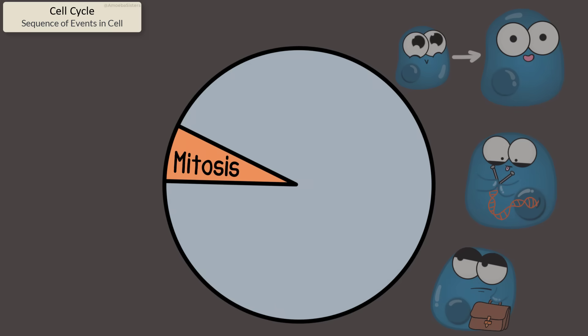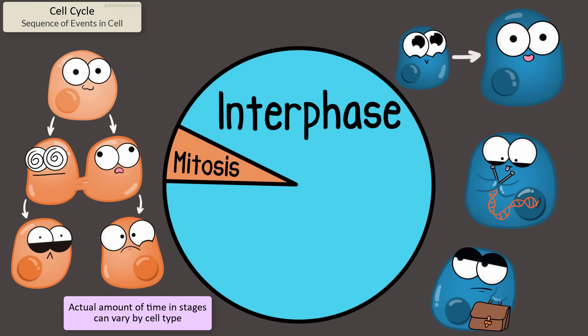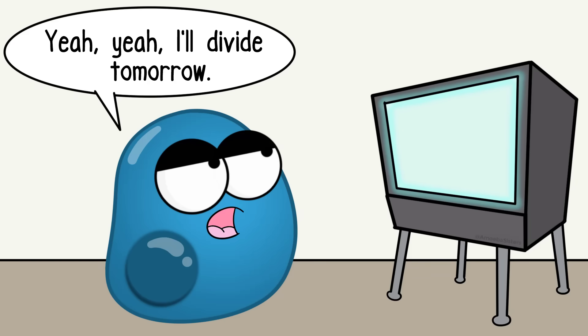Or they are in M phase, which includes mitosis and the actual splitting of the cytoplasm, cytokinesis. So this M phase is where cells actually divide to make more cells. But cells spend most of their time in interphase. So most of the time, they're not dividing.